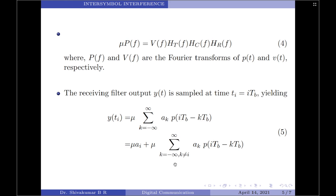In equation 5, the first term μ · A_i is produced by the i-th transmitted bit. The second term represents the residual effect of all other transmitted bits on the decoding of the i-th transmitted bit. This residual effect is called inter-symbol interference. Let us now discuss how and why inter-symbol interference is created.